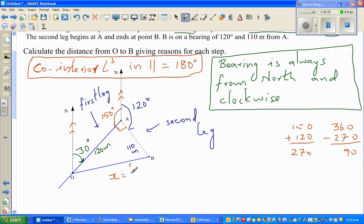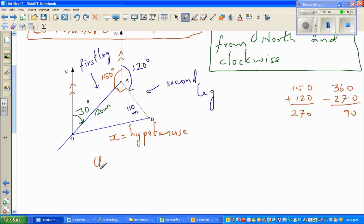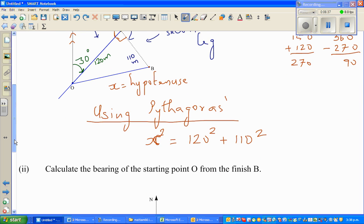So using Pythagoras, I can say x² equals 120² plus 110². As I've discussed in other videos, if you take square root of x², square root of x² equals square root of this whole thing, 120² plus 110², which implies x equals...